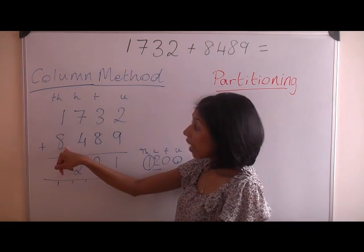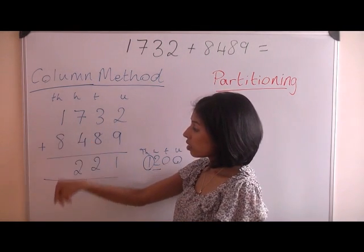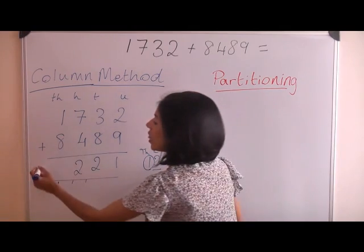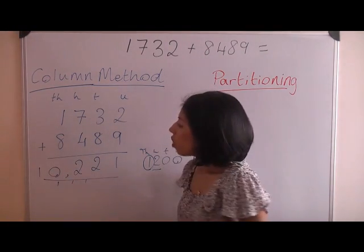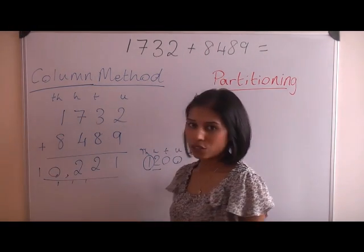Now we have 8,000, 1,000, another 1,000. That's 10,000. So all together, your answer is 10,221.